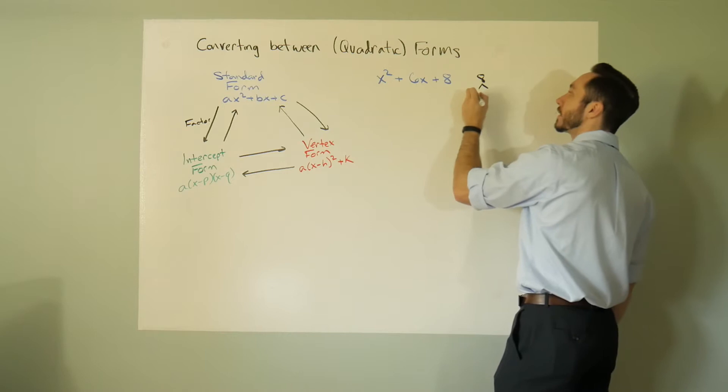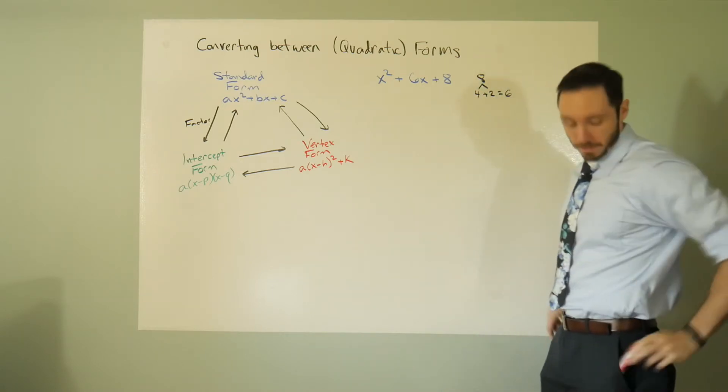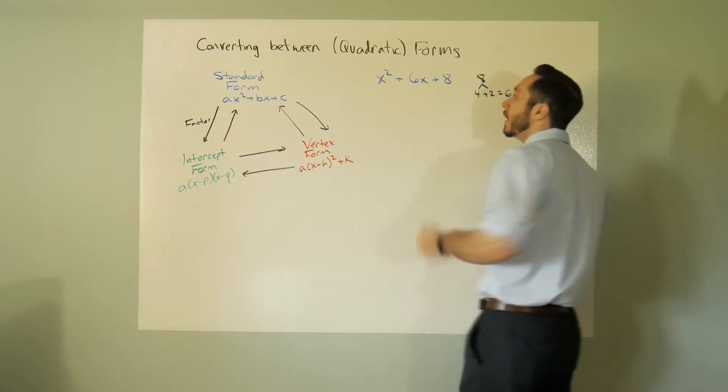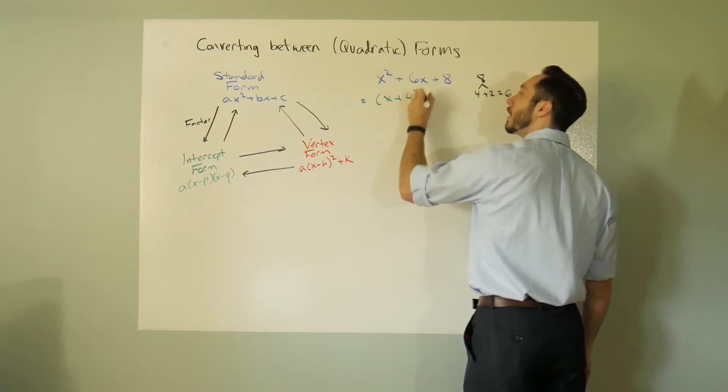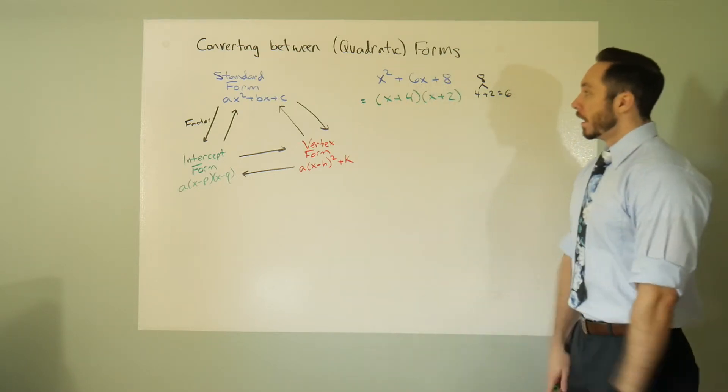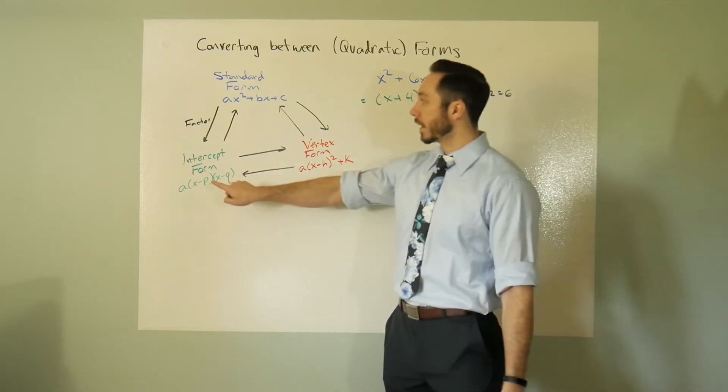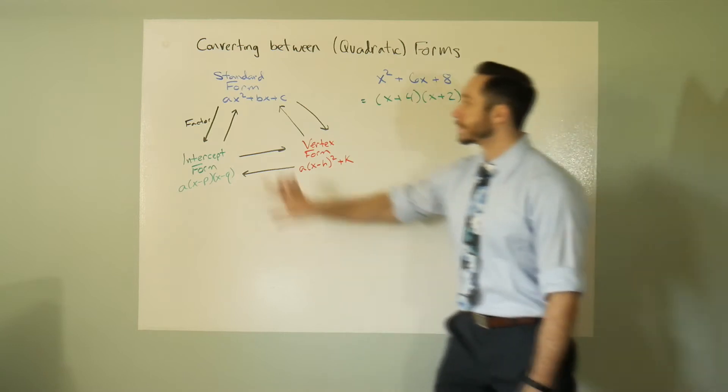Here we just think what two numbers multiply into 8 and add into 6, 4 plus 2. So writing this in intercept form would look like this is equal to x plus 4 times x plus 2.